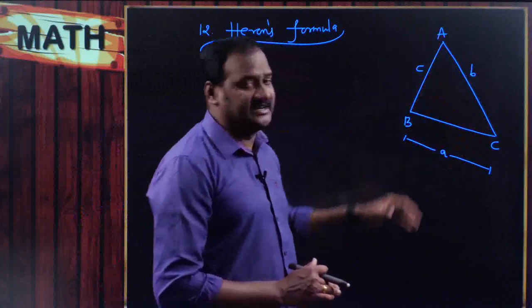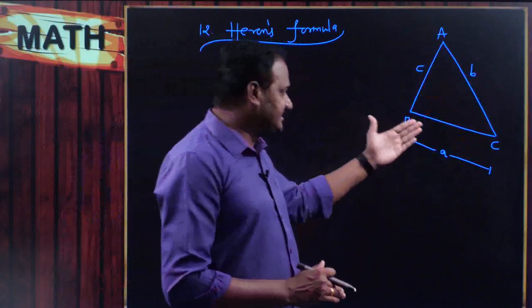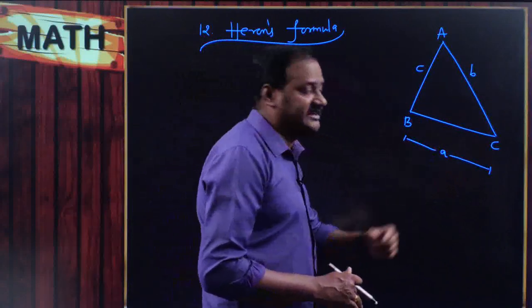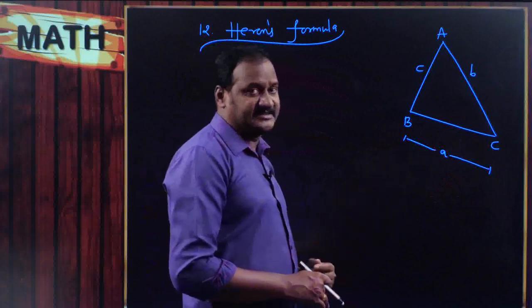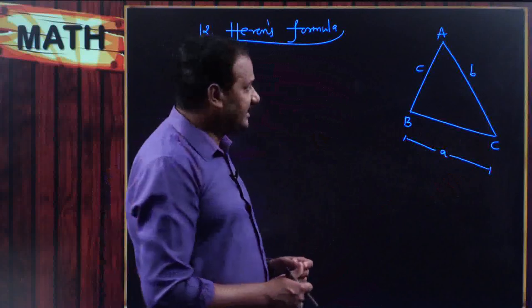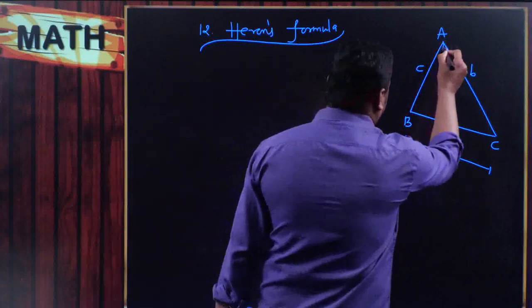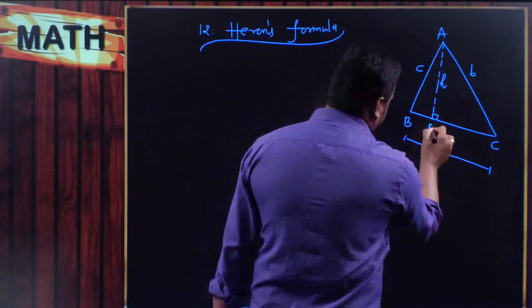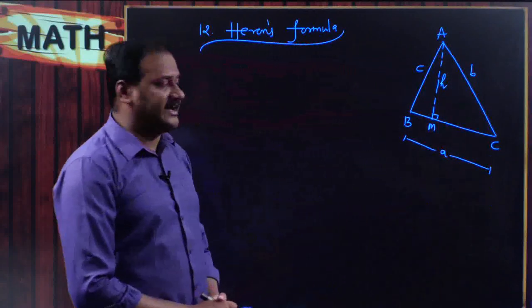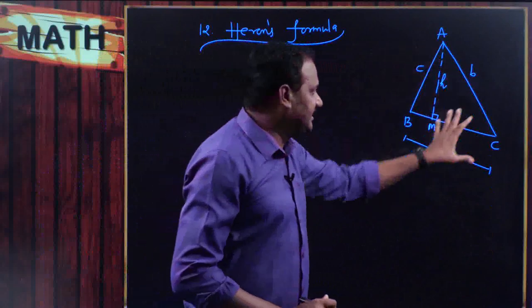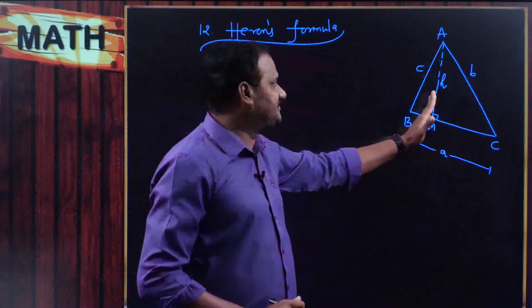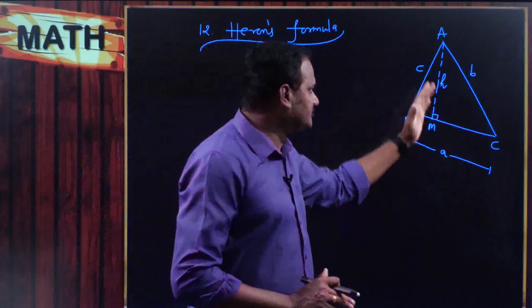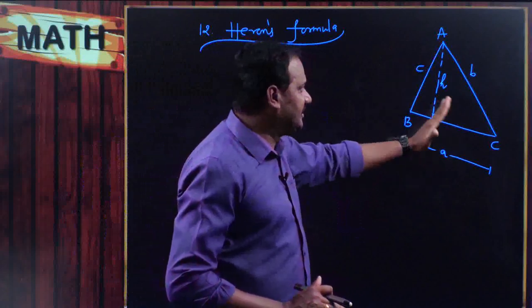Any one side of the triangle can be considered as the base. For our convenience, I am going to consider BC, which is small a, as the base. If small a is the base, then I need to draw the corresponding altitude onto BC. Let this altitude be named h and let the foot be M, so the altitude is AM. Now the area of triangle ABC, taking small a as base and small h as altitude, is equal to half into a into h.